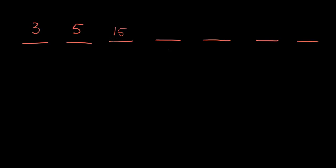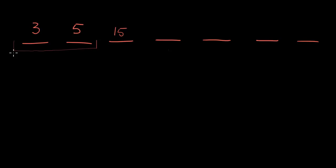Rather than multiplying all this out, this fourth term is going to be the term before it times itself — it's going to be the term right before it squared, because it's the term before it, and that term before it came from the product of everything else. So if we're multiplying the term by everything that came before it, that's the same as just squaring the term before it. So this term is going to be 15 squared.